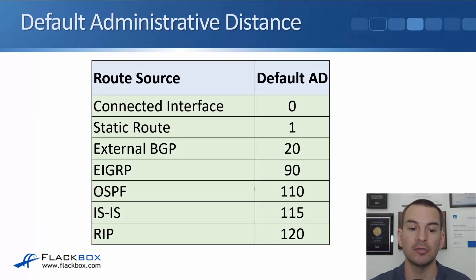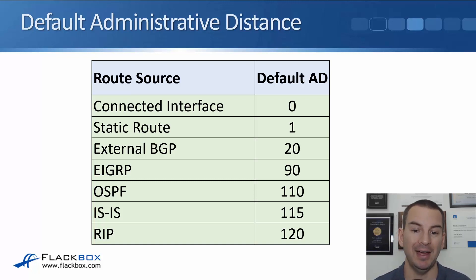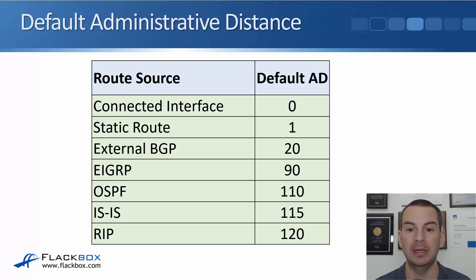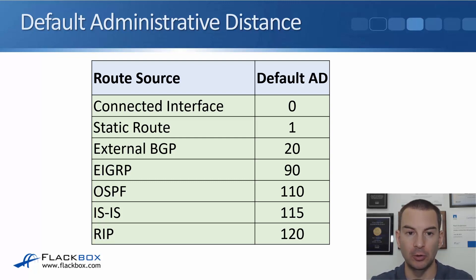This slide shows the default AD values of our popular routing protocols. Worst is RIP with a value of 120. Then we've got ISIS at 115. OSPF has an AD of 110. EIGRP is the most preferred of our IGPs, with an AD of 90. External BGP has 20. A static route has a default AD of 1. And connected interfaces will always be preferred — they have an administrative distance of 0.